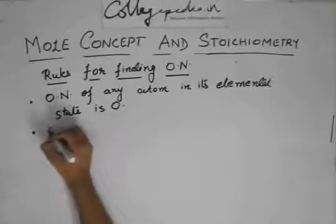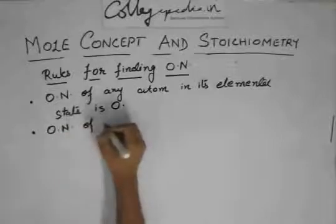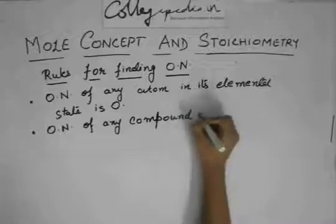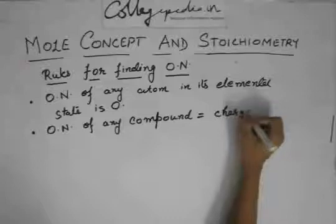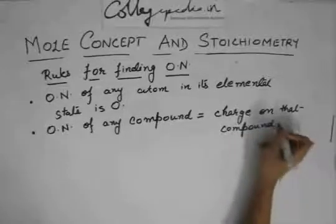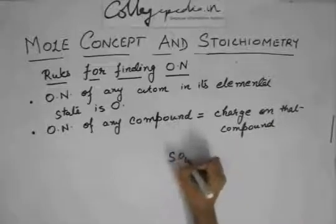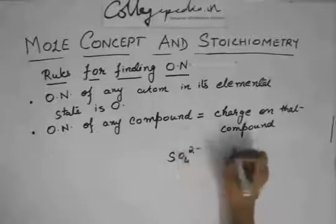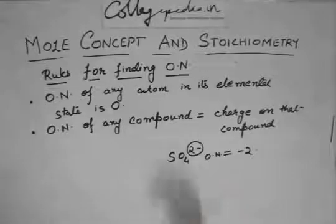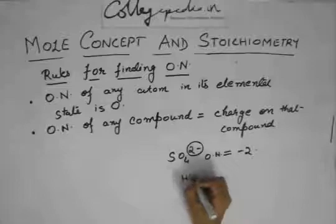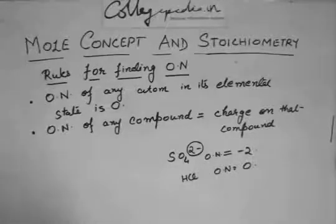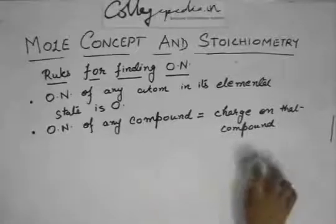The next rule is: if you want to find the oxidation number of a compound as a whole, it is equal to the charge on that compound. For example, SO4 2- has an oxidation number of minus two because the charge on it is minus two. Similarly, for HCl, the total charge is zero, so its oxidation number would be zero.